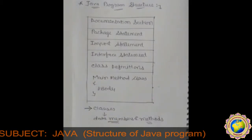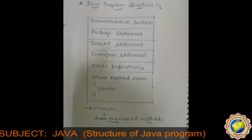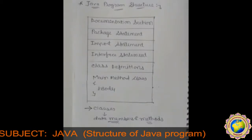A Java program may contain one or more sections. This is the structure of a Java program. The first section is the documentation section, which comprises a set of comments.